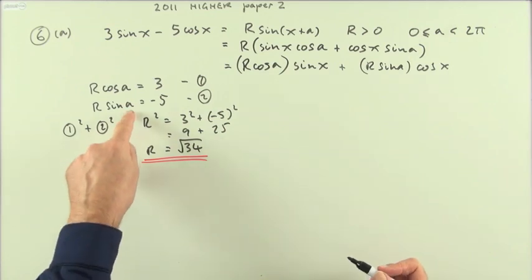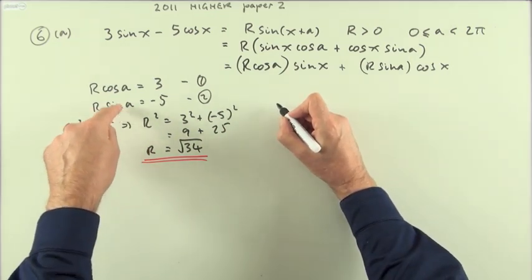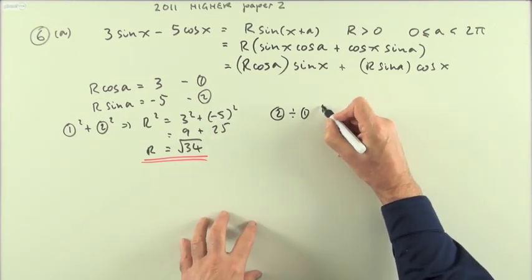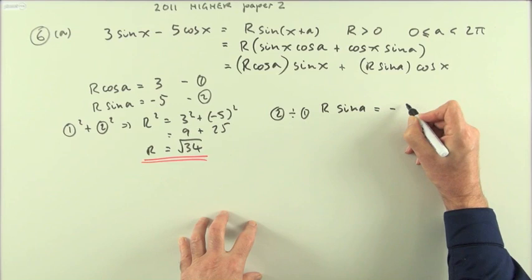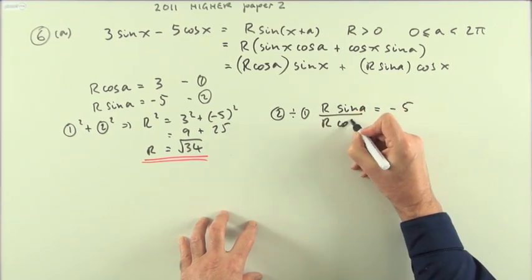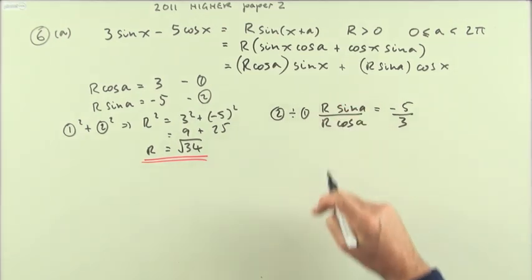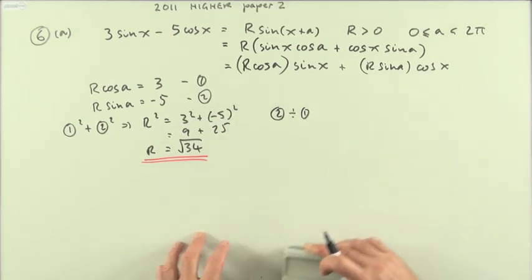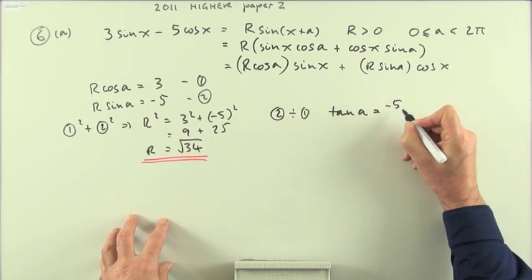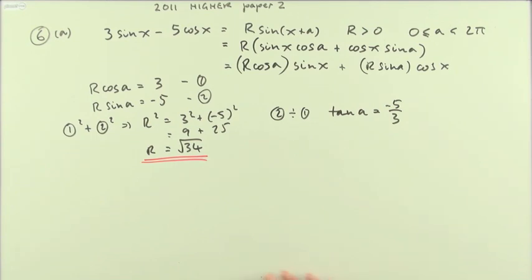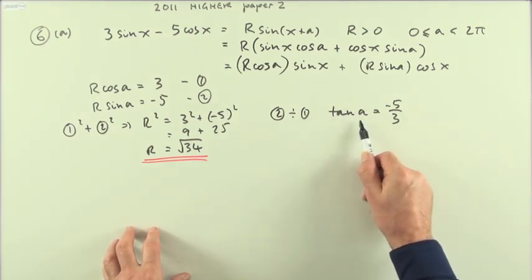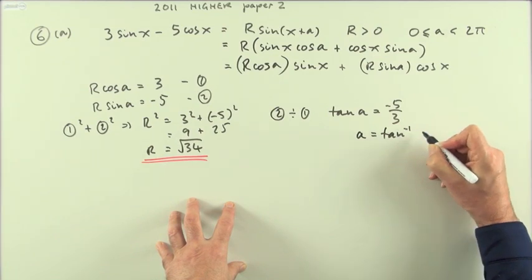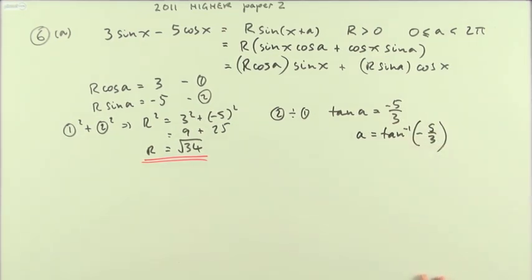To find a, do a division. Dividing equation two by equation one: r sin a over r cos a equals negative five over three. The r's cancel and sine over cosine becomes tangent, so tan a equals negative five over three. Therefore a equals the inverse tan of negative five over three.